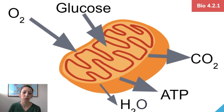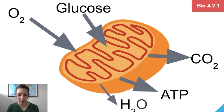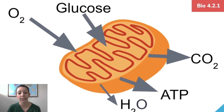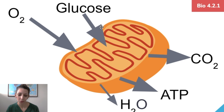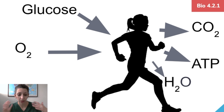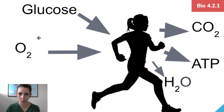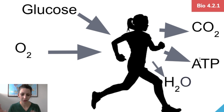Cellular respiration is the process by which we take oxygen and glucose and have many reactions occur in order to generate energy, or ATP, for the cell. Byproducts of this process include carbon dioxide and water. Cellular respiration takes place in the mitochondria. So the location is the mitochondria; reactants are oxygen and glucose; and products are water, ATP energy, and carbon dioxide. We consume glucose from food, take in oxygen when we inhale, and exhale carbon dioxide as a byproduct.